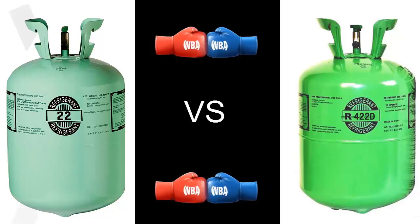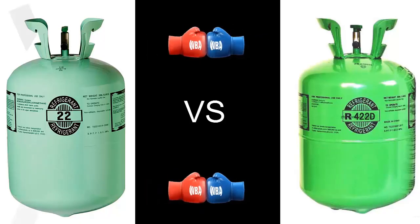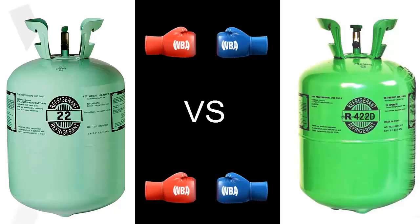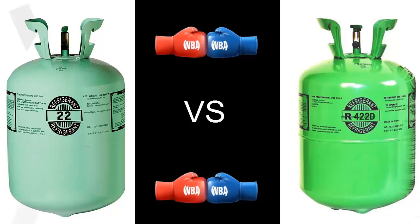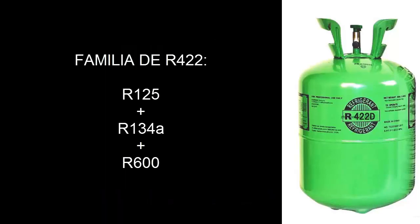R22 is a pure gas composed of a single component, while the refrigerants in the R422 family are formed by several components, such as refrigerant R125, refrigerant R134A, and isobutane gas R600.